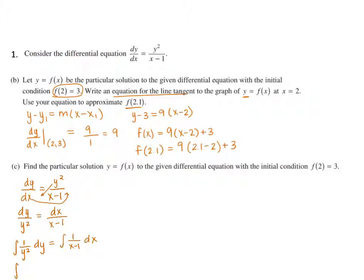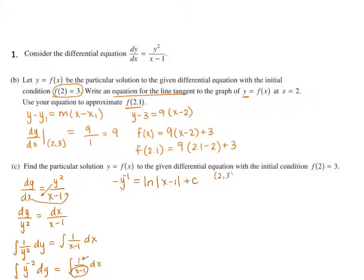This really becomes the integral of y to the negative 2 dy equals the integral of 1 over (x minus 1) dx. When we do our antiderivative, that is going to end up being negative y to the negative 1 equals — the derivative of the bottom is the numerator, so I know this is natural log absolute value of x minus 1, plus c. We don't need to forget that constant. Now we're going to use our initial condition of (2, 3). Substituting in, that's going to be negative 1/3 equals the natural log of |2 minus 1| plus c. We see that c is going to be negative 1/3. The natural log of 1 is 0.